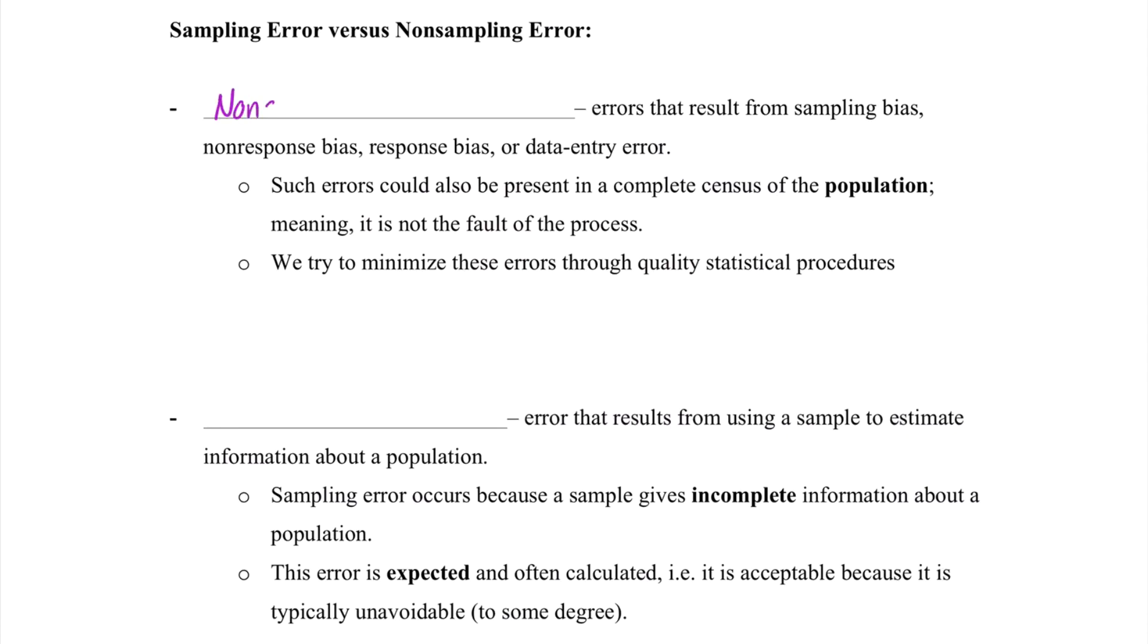And lastly, let's discuss sampling error versus non-sampling error. First, non-sampling error are errors that result from sampling bias, non-response bias, response bias, data entry error, basically everything we just discussed. To de-stats this a little bit, these are basically the errors that make us pretty sad, meaning we try to minimize these errors through quality statistical procedures. It's not necessarily the fault of the process. Instead, it typically means that we may have done something wrong.